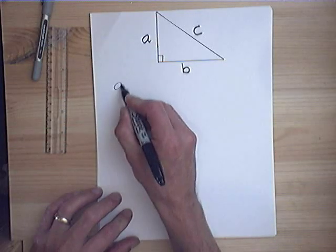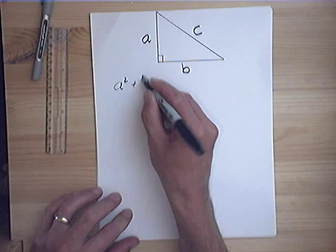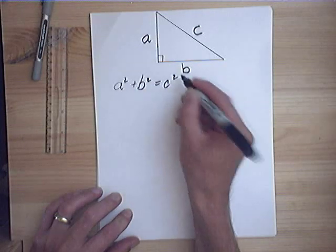Remember from Pythagorean Theorem, A squared plus B squared equals C squared.